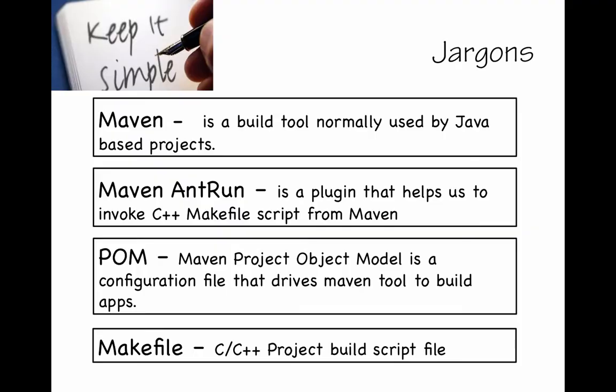Maven is a build tool normally used by Java developers. Maven Antrun is a plugin used to build any Ant-based projects from Maven. The way I'm going to use Maven Antrun is to invoke a makefile from within the Maven pom file. The pom file, or Project Object Model, is basically a script configuration file which drives Maven to build any kind of project. Maven is a completely flexible, configurable tool which can be extended by plugins to compile any kind of project — not necessarily restricted to Java. And of course, makefile is the typical project build script file used to compile C or C++ based projects.